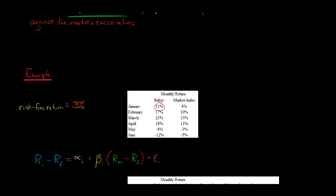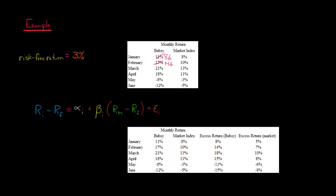We're going to take 11% minus 3%, so that's 8%. And then 17% minus 3%, that's 14%, and so forth. So we've got here our excess return. Bubsy is 11% minus 3% is 8%, 17% minus 3% is 14%, and so forth. This is our excess return for Bubsy.